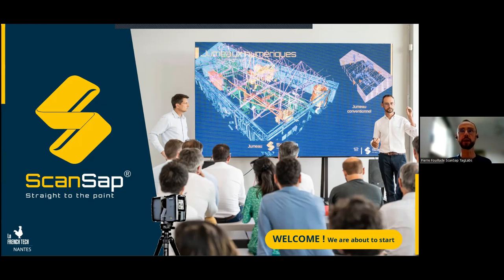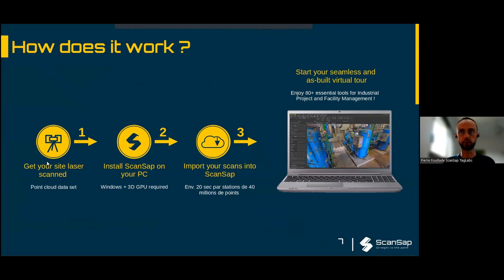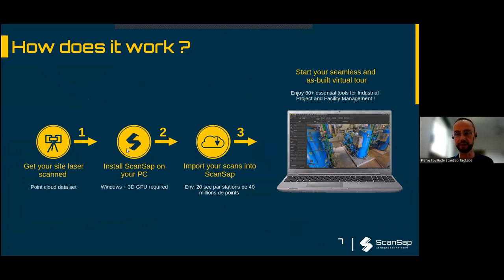How does it work? To run a point cloud digital twin into ScanSAP, first you need to scan. It's a laser scan done on site, and you need to do different stations to get all the details of the scan environment. Then you need to install ScanSAP on your PC or laptop. ScanSAP has powerful algorithms that will allow you to handle huge point clouds with billions of points with fairly low specifications.